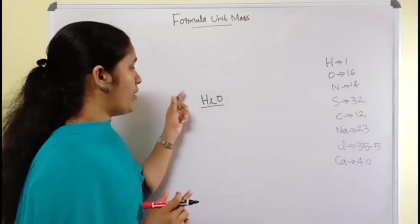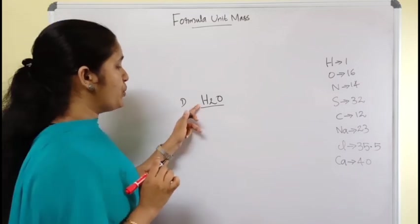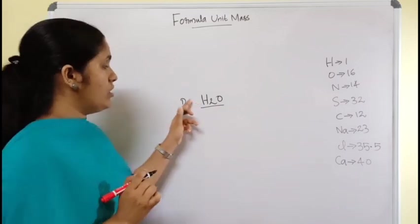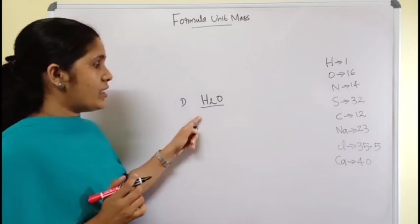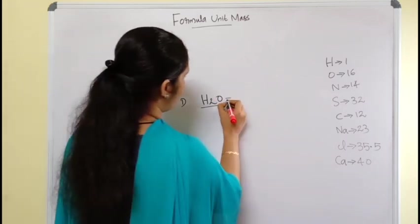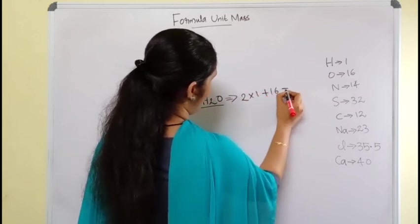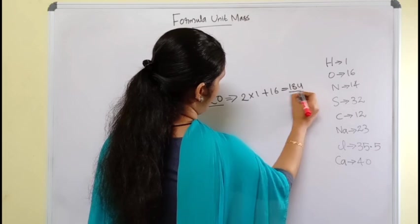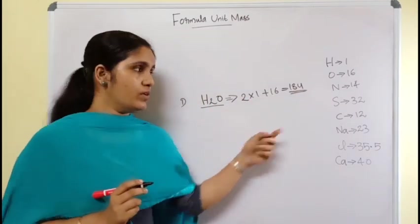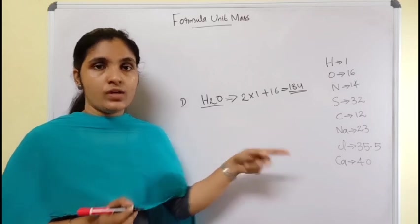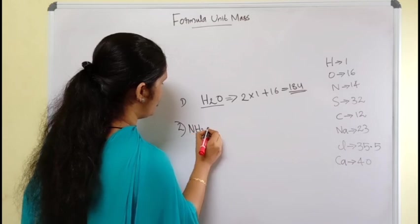Let's calculate the formula unit mass of H₂O — two hydrogen and one oxygen. The mass of one hydrogen atom is 1, and there are two hydrogens, so: 2 × 1 plus oxygen's mass of 16 = 18 u. So the formula unit mass of water is 18 u. Next, let's find the formula unit mass of ammonia, NH₃.